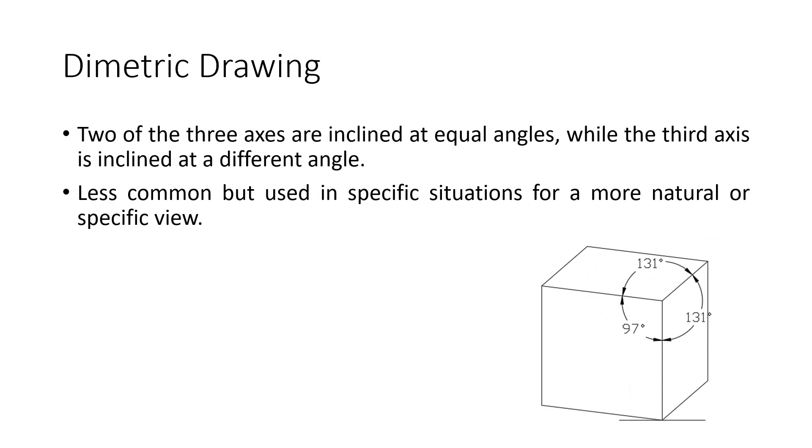In dimetric projection, two of the three axes are inclined at equal angles, while the third axis is inclined at a different angle.